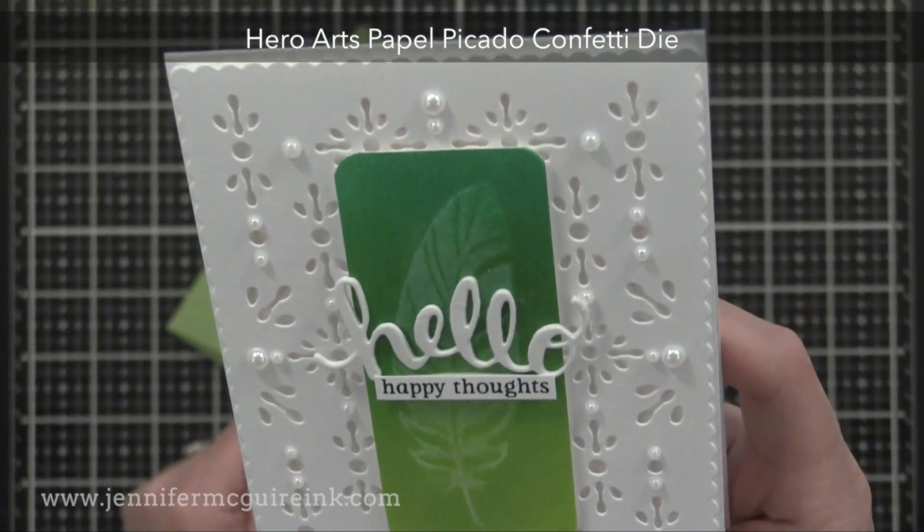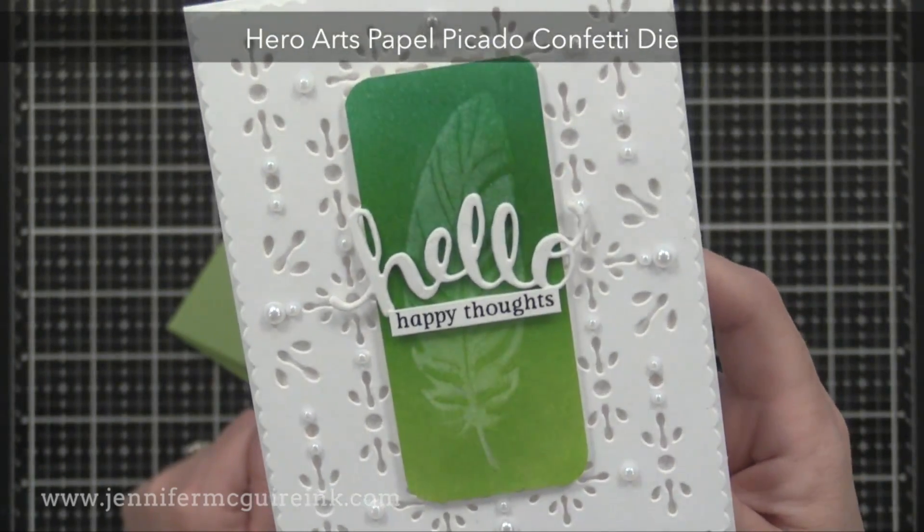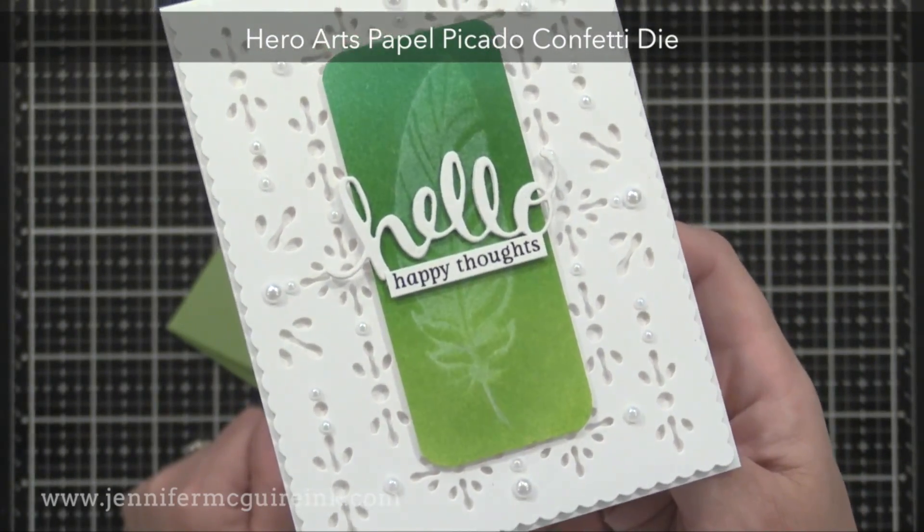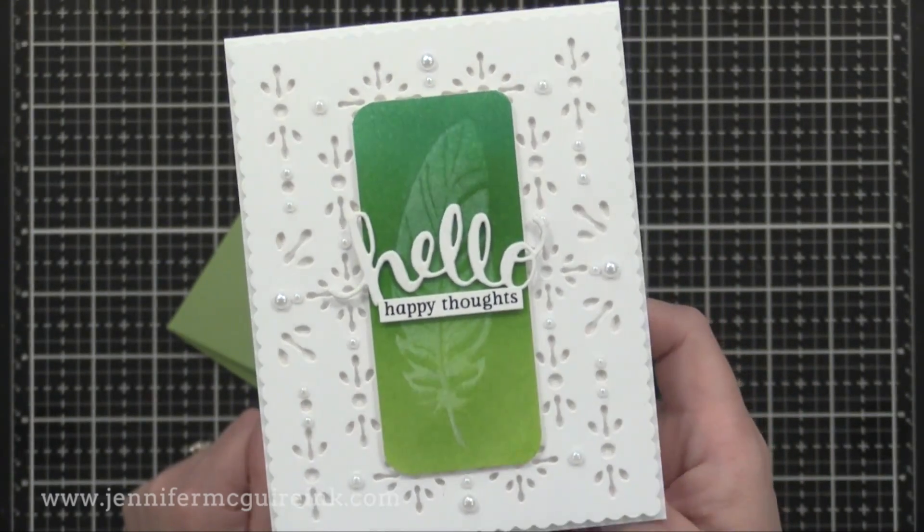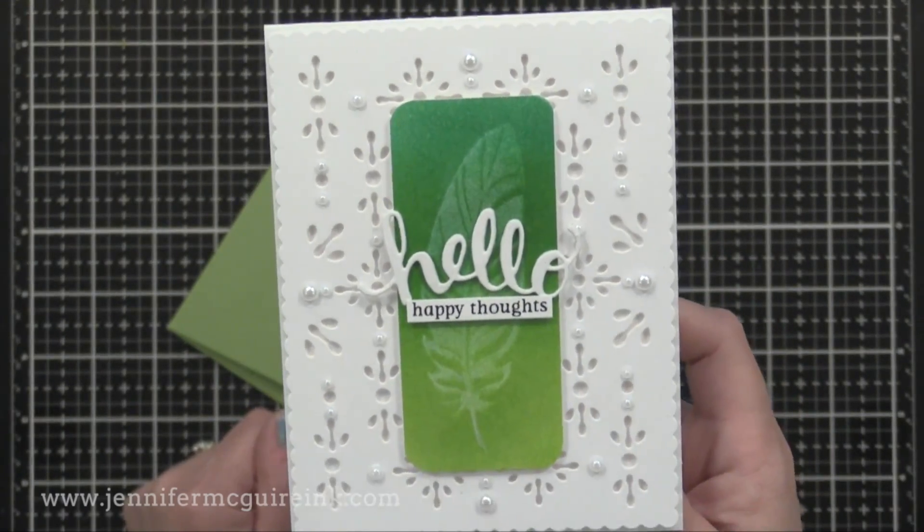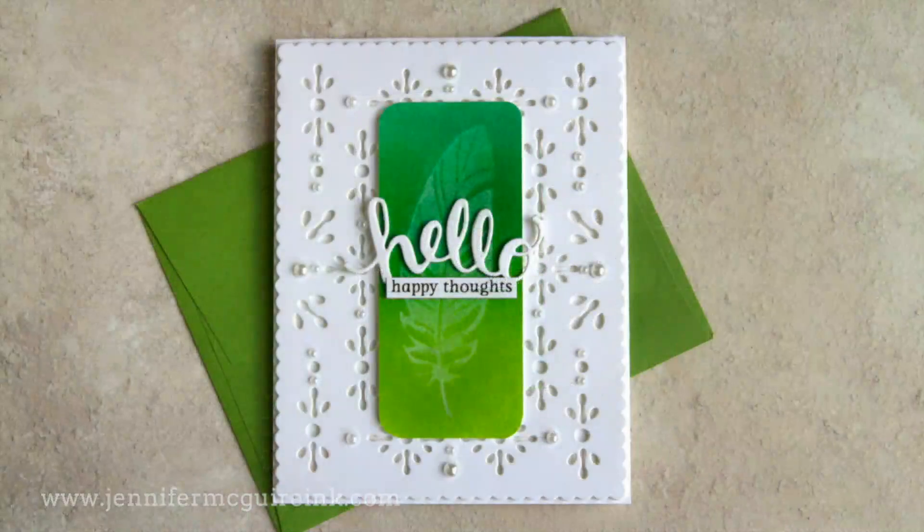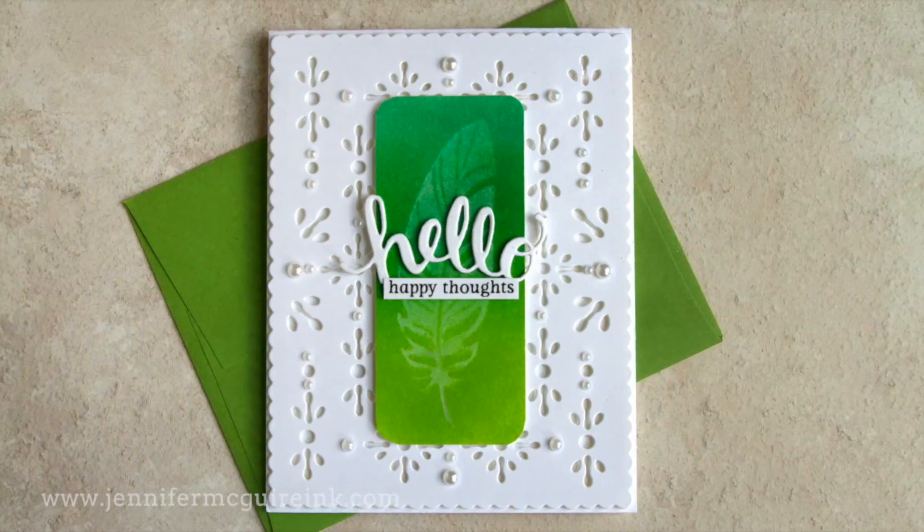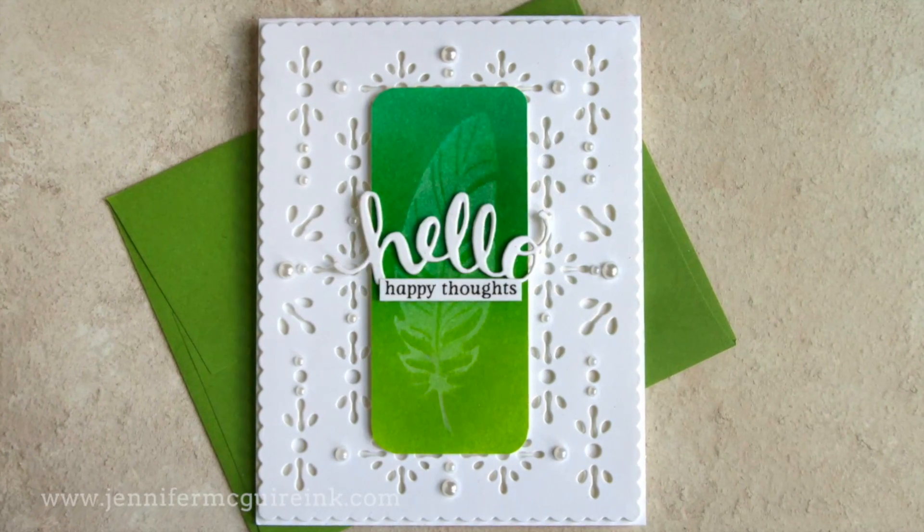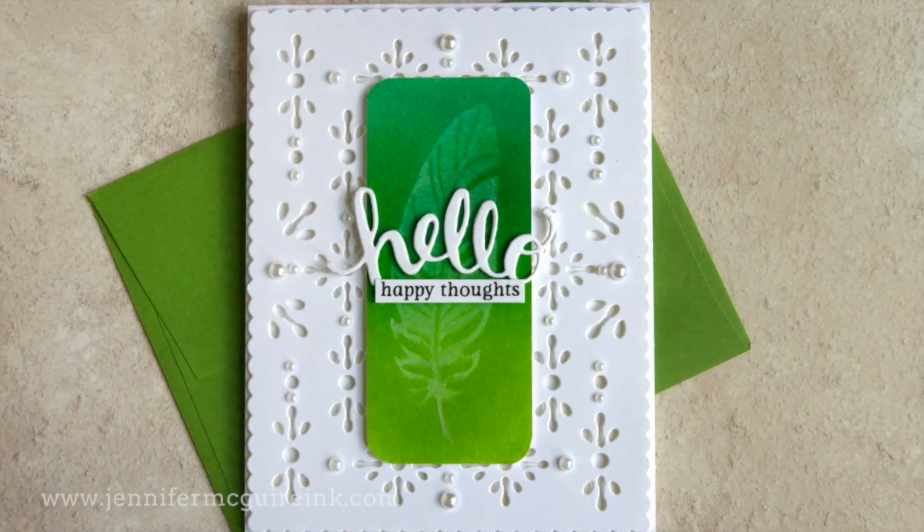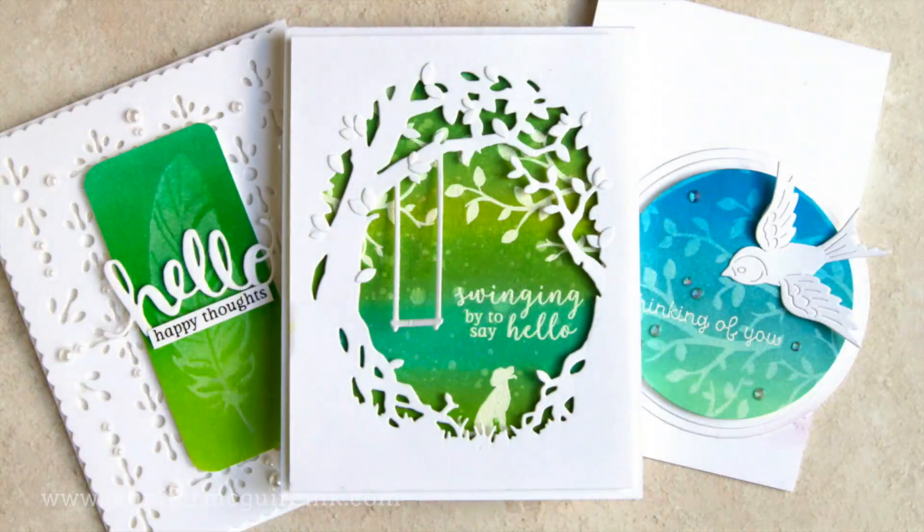That is just so beautiful. And I added a hello die cut to the front, along with a happy thought sentiment that is from that same My Monthly Hero kit. I also added some pearls to the background for a little bit of fun. So even though this is a soft looking resist, I kept the background soft so that the focus stays on that feather.